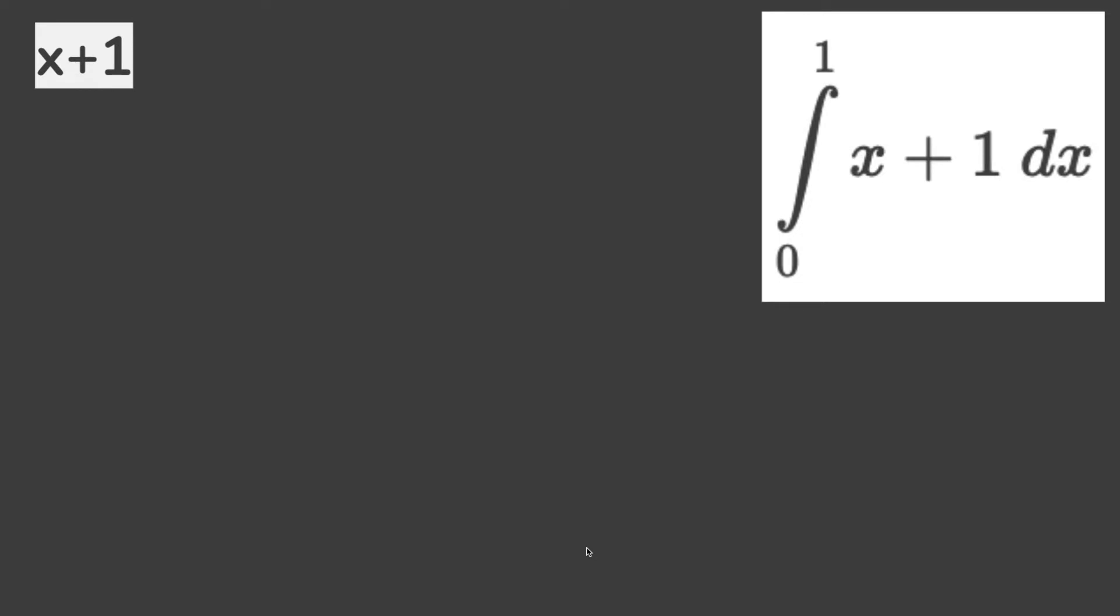Now, to reverse power rule, we can do this. As you can see, there's a half x squared plus x on the screen. If we take the power rule of this, we can get x plus 1. That's how you know and that's how you confirm that you've done it properly.